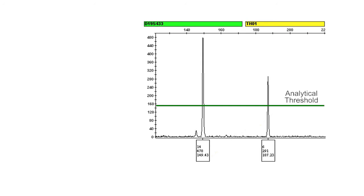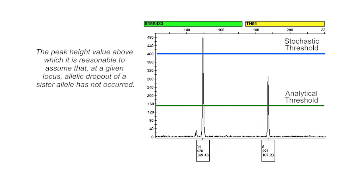Now, let's talk about stochastic thresholds. The stochastic threshold applies to low DNA input data where stochastic effects may be in play. You can reasonably assume that a peak above the stochastic threshold is not impacted by stochastic effects. Therefore, dropout of a sister allele is unlikely.